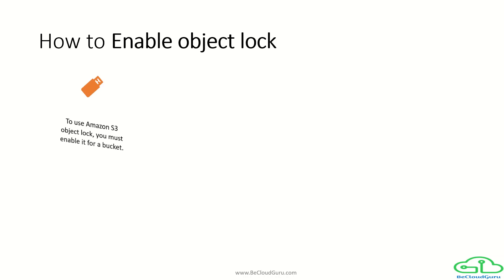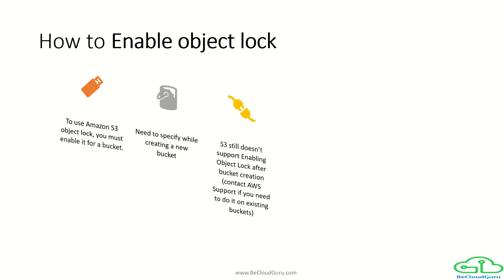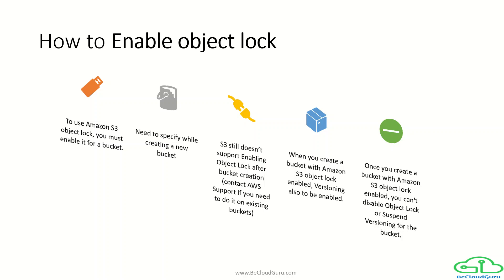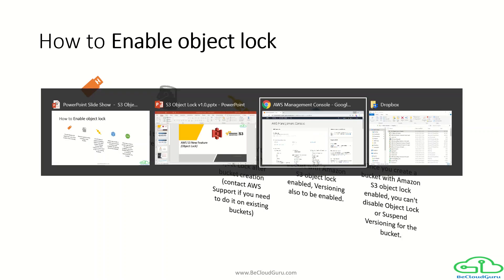To use Amazon S3 Object Lock, you must enable it when creating a new bucket. You cannot enable Object Lock for an existing bucket. If you need that facility on an existing bucket, you need to contact AWS Support. When you create a bucket with Object Lock enabled, note that versioning will also be automatically enabled. Once created, you cannot disable Object Lock or suspend versioning for that bucket.